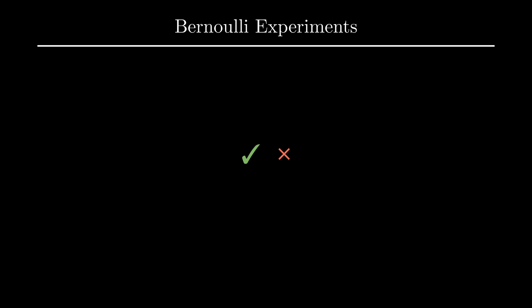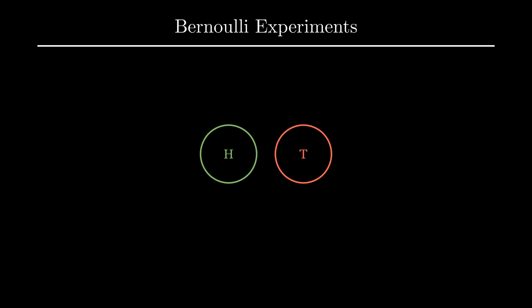As an example, if you flip a coin, the probability of getting heads or tails is 50%. This is an example of a Bernoulli experiment. We use the letter P to denote the probability of success in a Bernoulli experiment. The probability of failure is therefore 1 minus p.